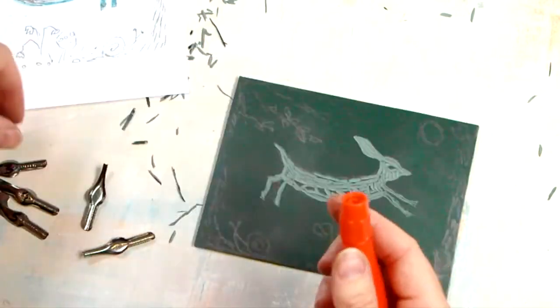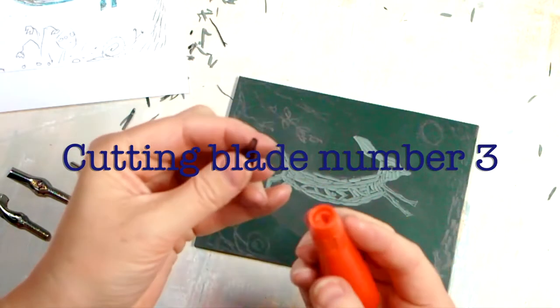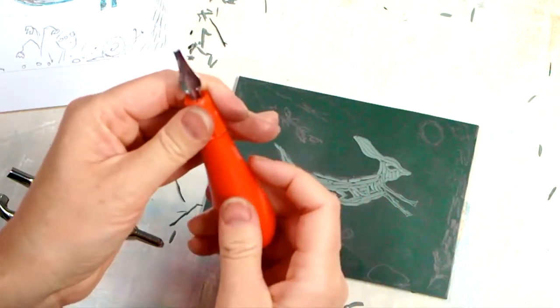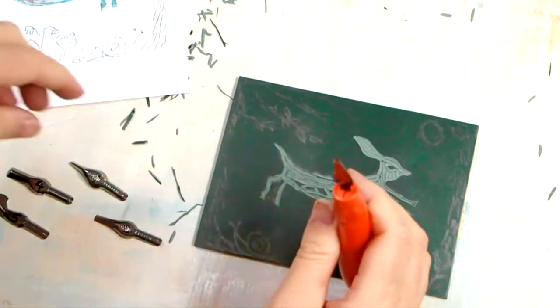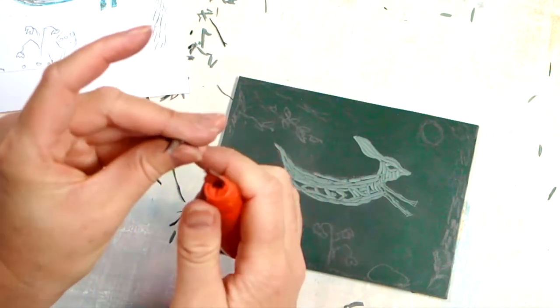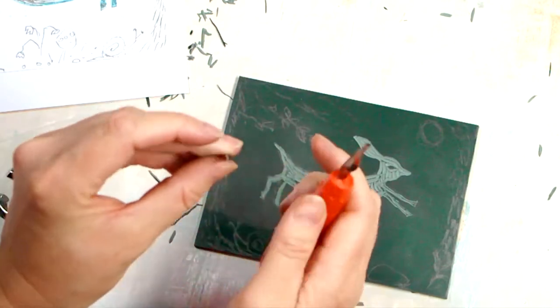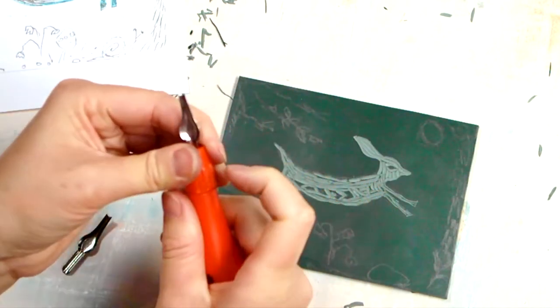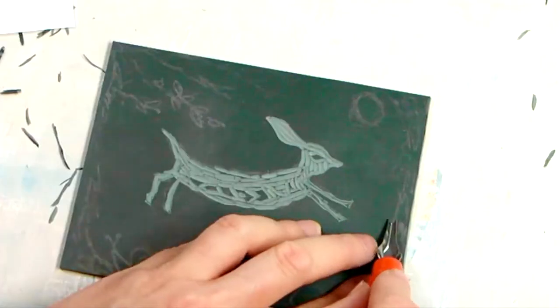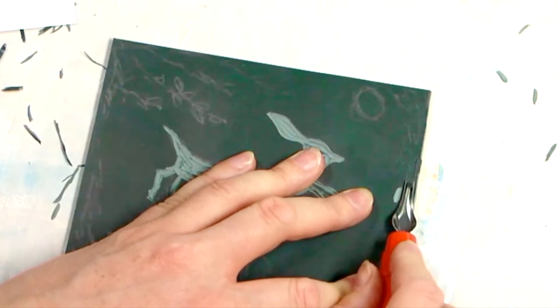So I'm swapping now to blade number three, which is a slightly wider profile, still a U-shape like blade number two, similar, more rounded than blade number two but similar size, but not as pointy as blade number one. For this I'm going to carve some of the tree trunk at the side. It's to just almost look like tree bark.